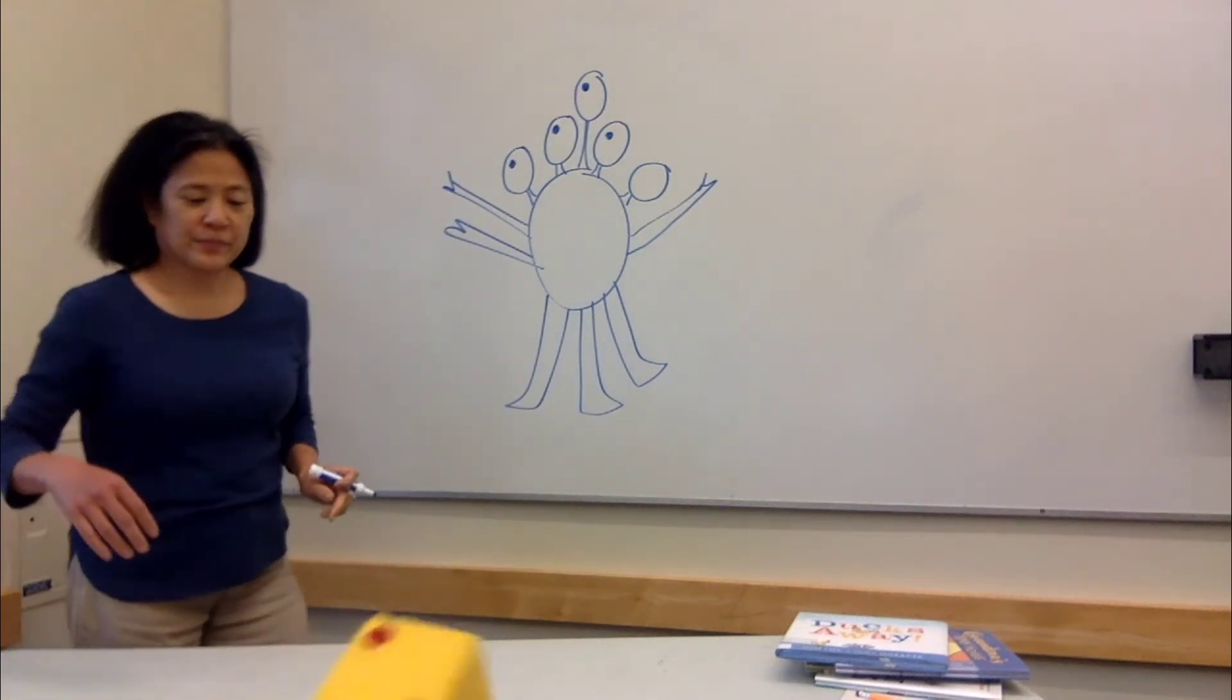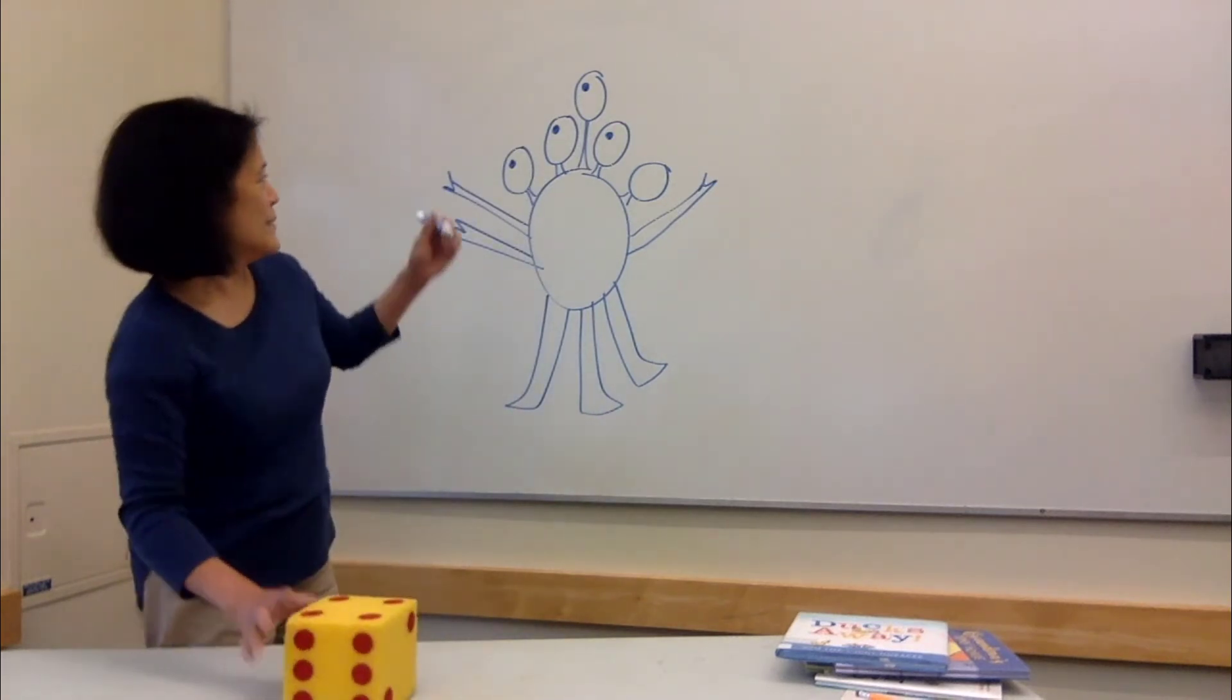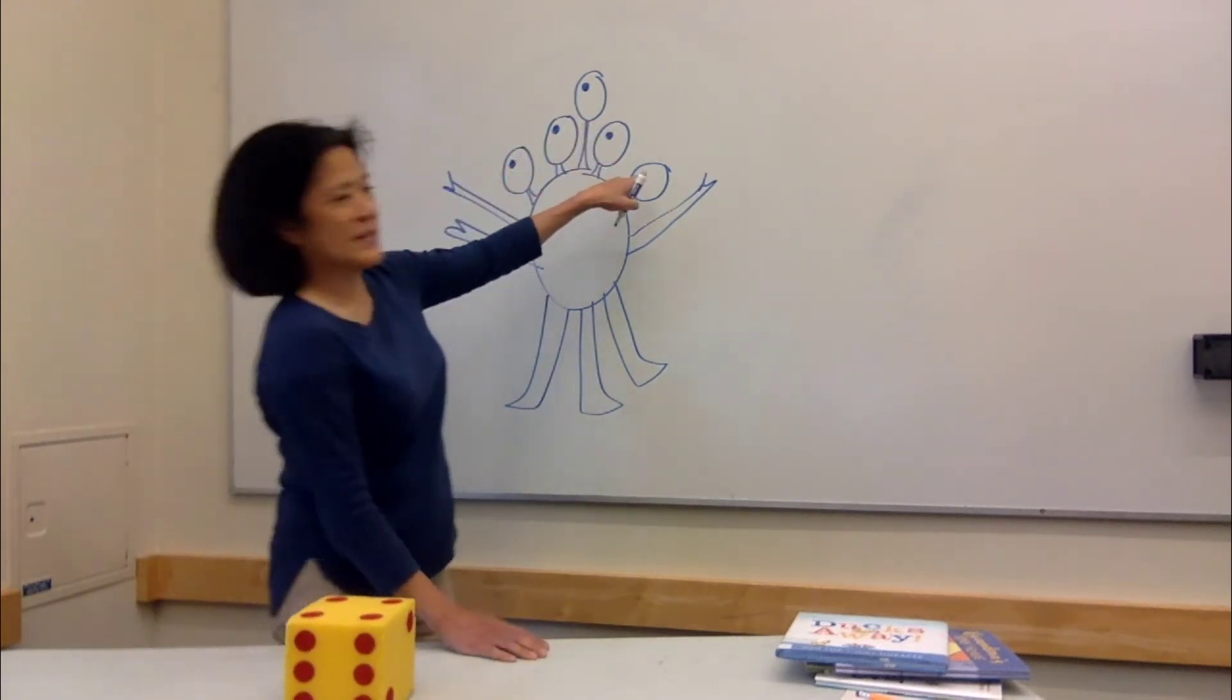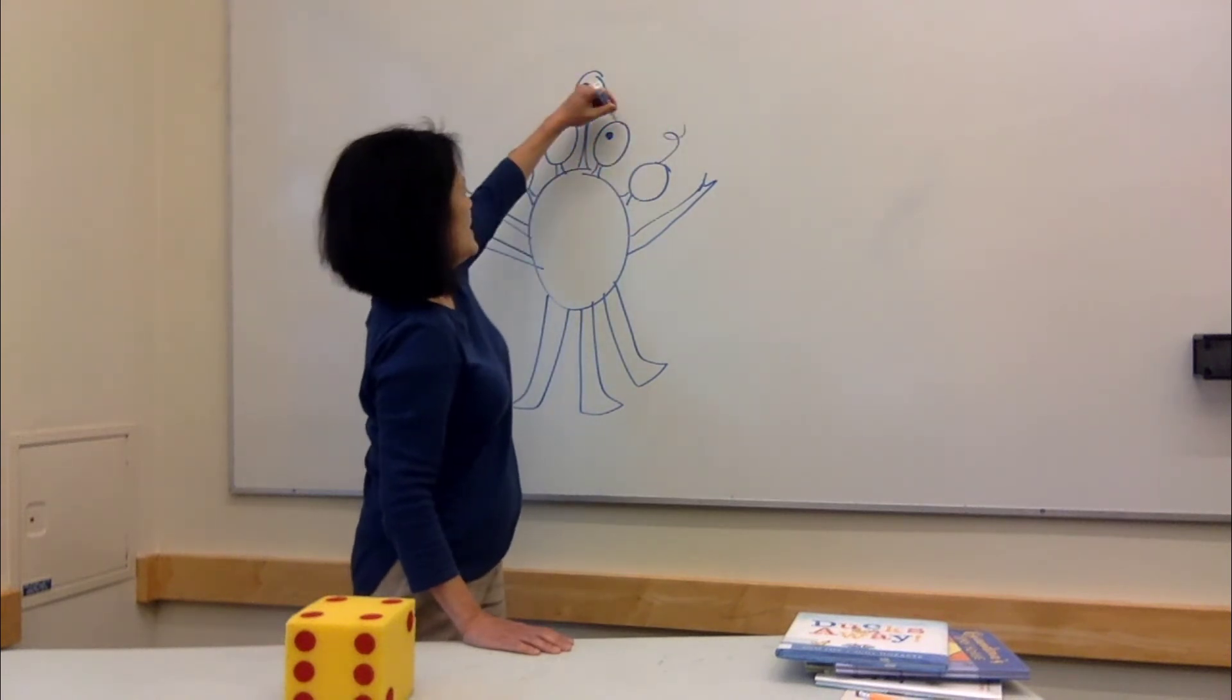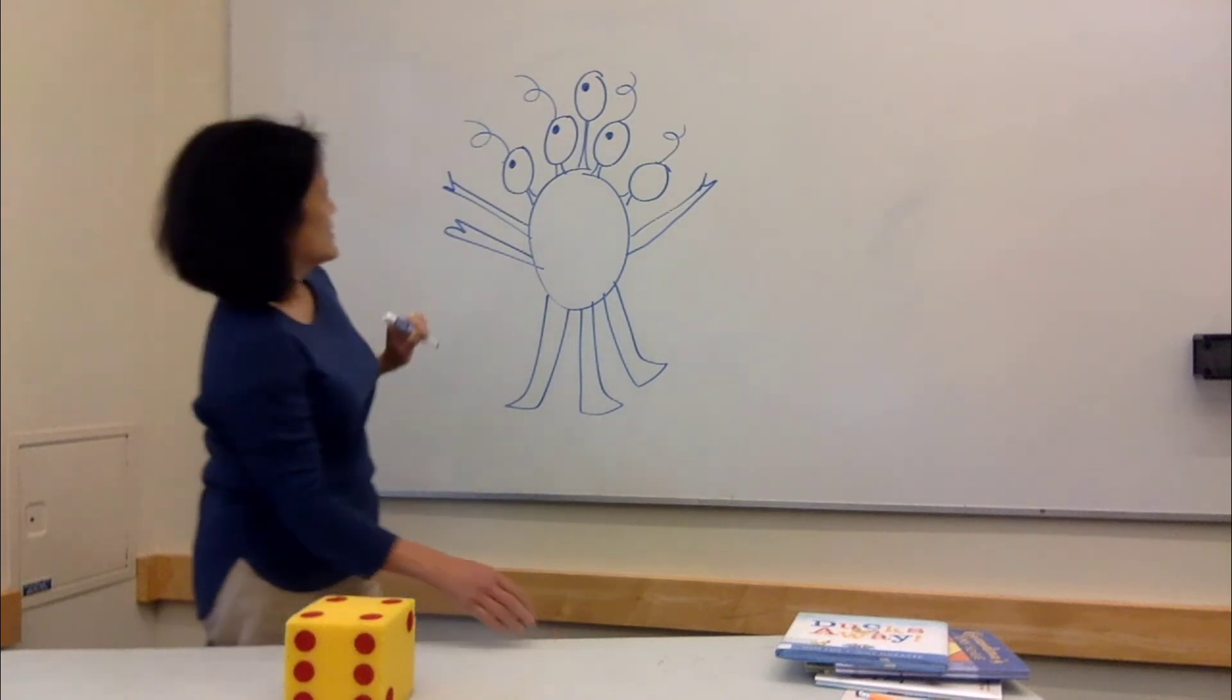And how about some hair? Four hairs. One, two, three, four. How about this doesn't have an eye? I'll give this a hair. One hair, two hair, three hairs, four hairs.